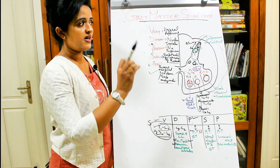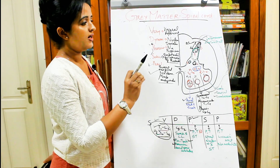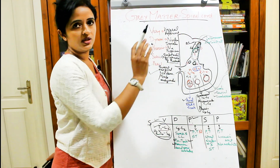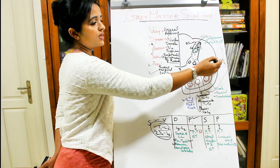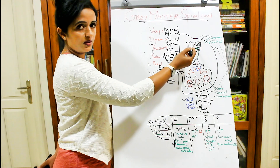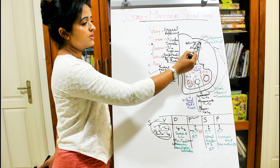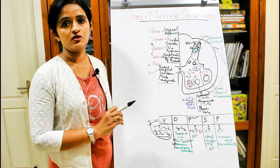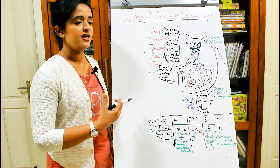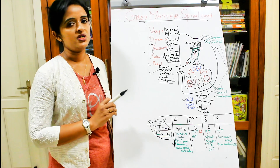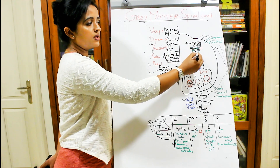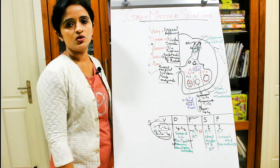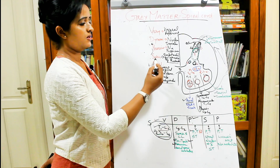Substantia gelatinosa of Rolando is a translucent, gelatinous region containing neurons that receive fibers from the lateral set of dorsal nerve root fibers. The sensory nerves enter the spinal cord through the dorsal root, divided into medial and lateral groups; the lateral group enters the substantia gelatinosa. Previously it was believed that substantia gelatinosa of Rolando gives rise to the spinothalamic tract, but later studies proved this is not purely the case — some fibers relay there, some interneurons connect with nucleus proprius, and some fibers simply pass through.